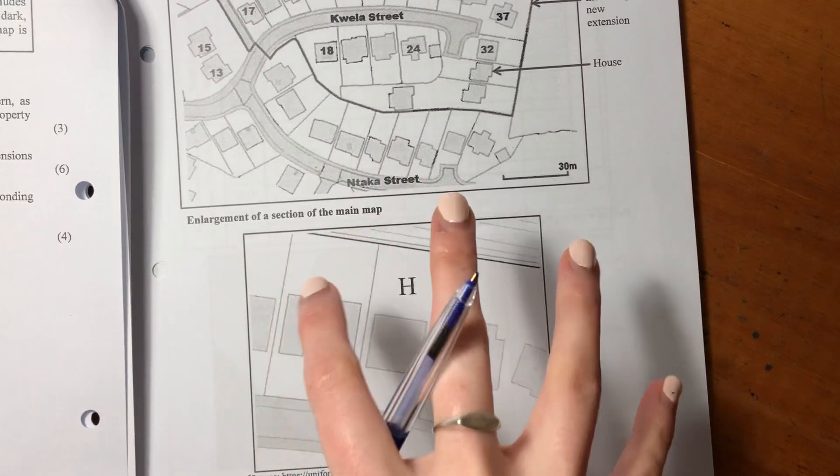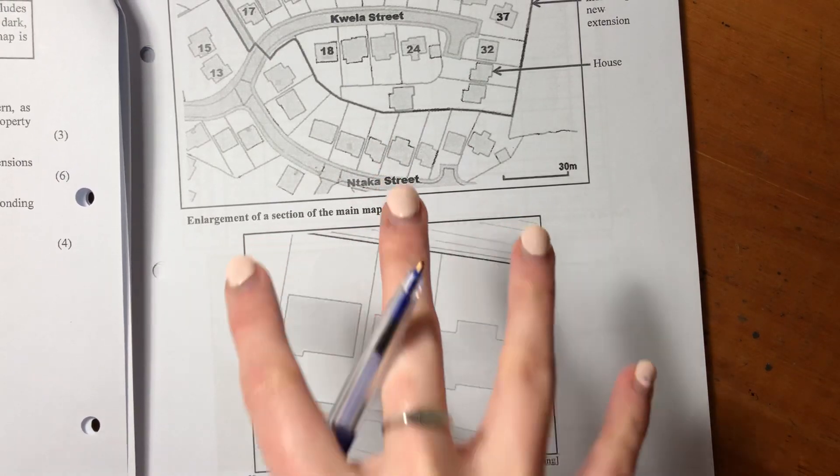It says annexure D, so again we're using the annexure, shows the location of Lisette's property, marked H, which includes the house on the map of Mandela Park. The new extension is indicated using dark borderlines as shown on the map. An enlargement of the section of the main map is also shown. So here's the map. There's H, so that's where Lisette is chilling, that's where she'll be living, and then this is basically a zoomed in version of H over there.